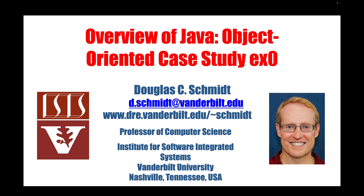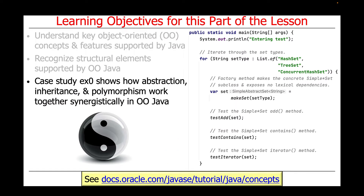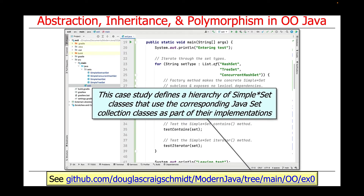Now that we've given an overview of key concepts, features, and structural elements in object-oriented Java, we're going to turn our attention to a case study that will put all those pieces together. This case study, known as EX0, shows how abstraction, inheritance, and polymorphism work together synergistically in the context of an object-oriented Java program. It defines a hierarchy of simple set classes that use the corresponding Java set collection classes as part of their implementations. You can find this case study's source code in my GitHub repository in the Modern Java OO EX0 project.